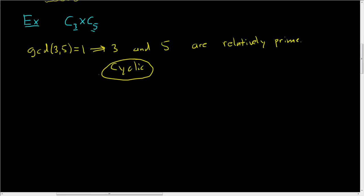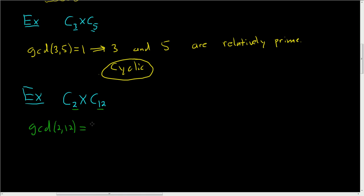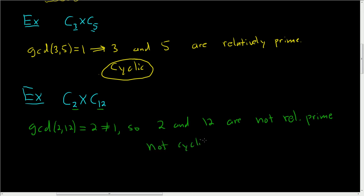Let's do another example. Let's look at the cyclic group of order 2 and take the direct product of that with the cyclic group of order 12. The orders are 2 and 12. If you take the greatest common divisor of 2 and 12 — that is, the largest integer that divides both 2 and 12 — you get 2, which is not equal to 1. So 2 and 12 are not relatively prime, and our group is not cyclic.